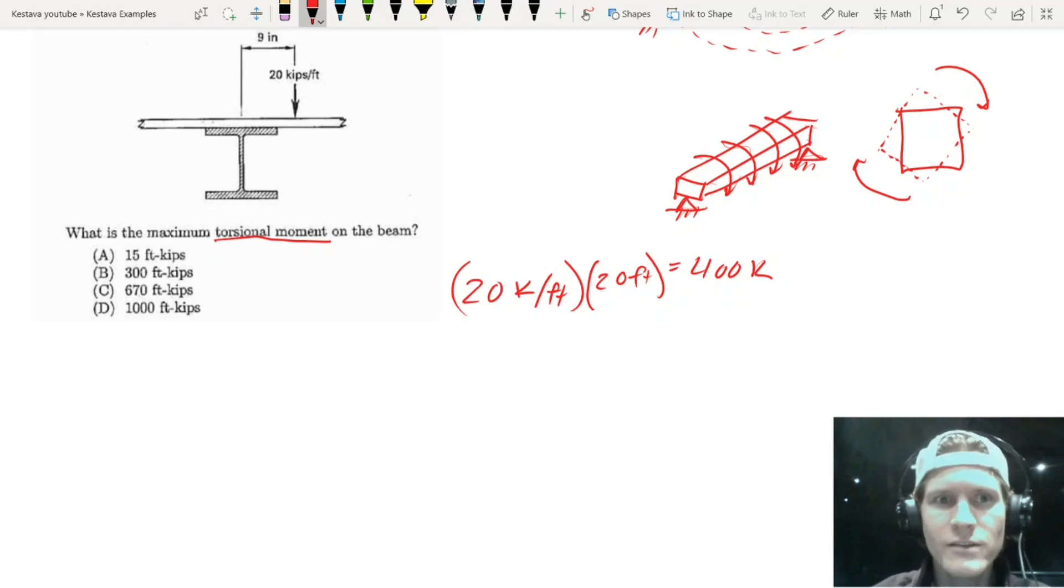Now you just need your length. So you need your eccentricity basically to create that torsion, because if you had a load that's acting right at the web or at the center line of your beam, then you would have no torsion. You just have a gravity load being applied along your beam. That would be really easy, and you'd be done.